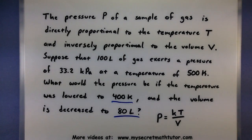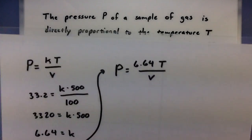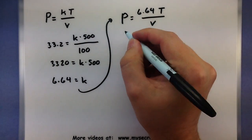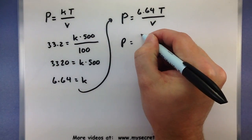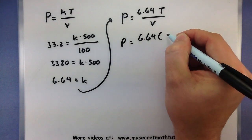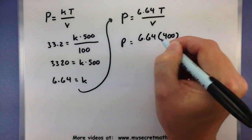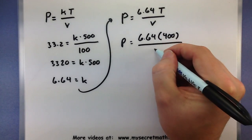Let's put those values in for our temperature and volume and find out. So our pressure equals 6.64, our new temperature 400 over volume 80.